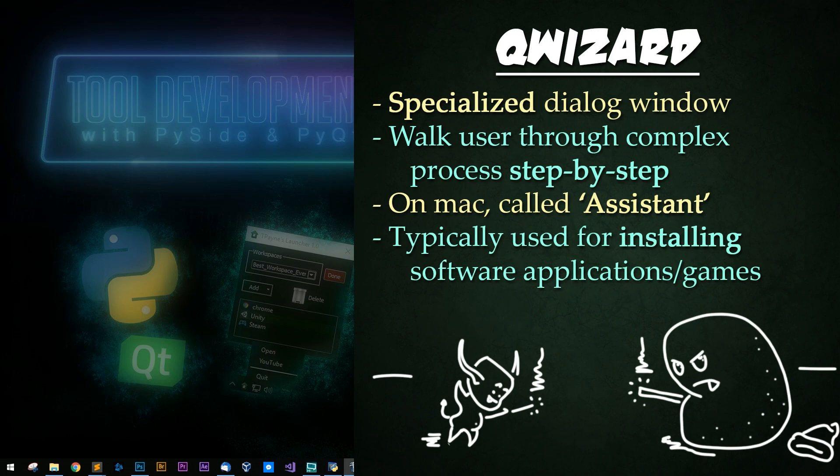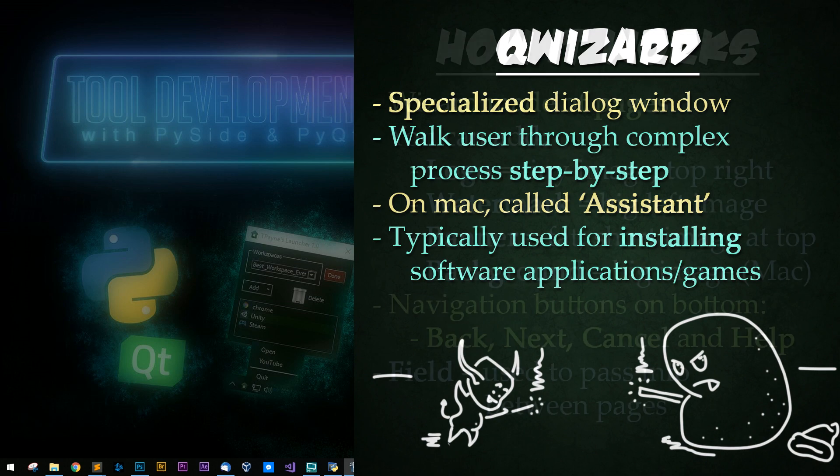A wizard is a specialized dialog designed to walk the user through a complex process step by step. On a Mac, this application is called an Assistant. You've seen this loads of times when installing applications, because typically wizards are only used once. If your application is going to be used more than once, consider other design options for your application or tool.